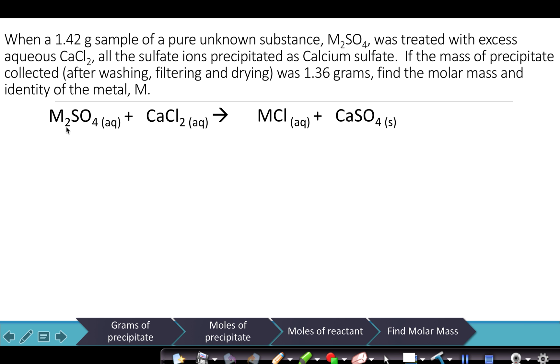If we look, there's two M's on the left, only one M on the right, two Cl's on the left, only one Cl on the right. So in order to balance it, we're just going to put a 2 in front of the MCl. Now the SO₄ was already balanced and the Ca was already balanced, so we're all set there.